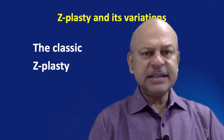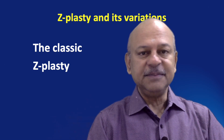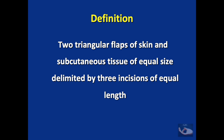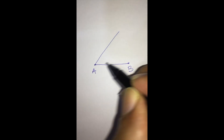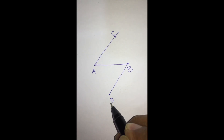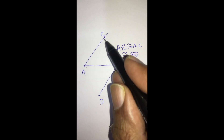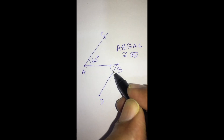First, let us see the classic Z-plasty and the basic principles governing it. The definition of the classic Z-plasty is two triangular flaps of skin and subcutaneous tissue of equal size, delimited by three incisions of equal length. When the scar or line AB is drawn and two lines are drawn from either end — at A and at B — at an angle of 60 degrees and of equal length, we get a classic Z-plasty where the sides are equal and the angles are 60 degrees.